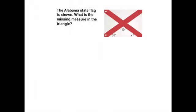Now I want you to look at this. It says the Alabama state flag is shown. What is the missing measure in the triangle? So when I look at this triangle right here, I have one angle being 110, one being 35, and I want to know what this X is. So I want you to pause the podcast and try and solve it on your own.